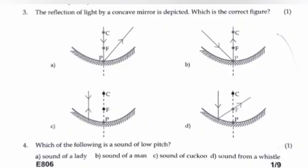Question 4. Which of the following is the sound of low pitch? A. Sound of a lady. B. Sound of a man. C. Sound of cuckoo. D. Sound from a whistle. Answer: B. Sound of a man.